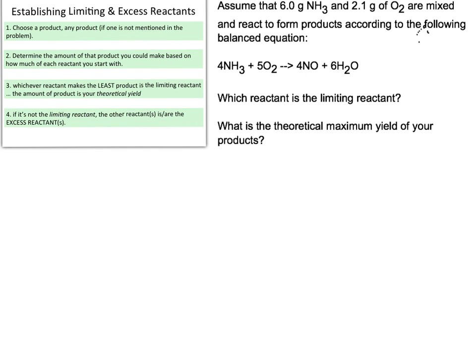What we're going to be working on here is establishing excess and limiting reactants. We have 6 grams of NH3 and 2.1 grams of O2, mixed together and reacting to form products based on the equation below. So NH3 and O2 — ammonia and oxygen — are both reactants, and NO and H2O are our products. What we're supposed to find is which reactant is the limiting reactant.